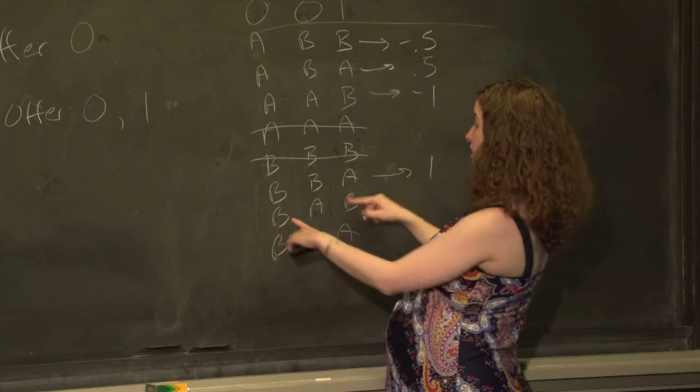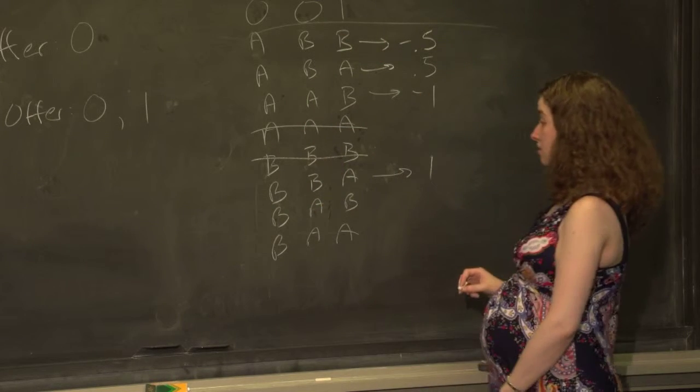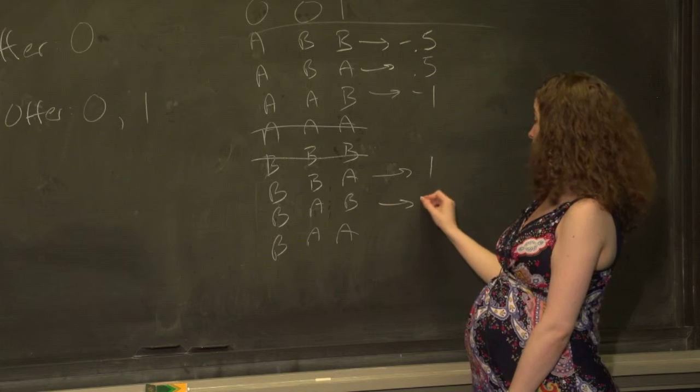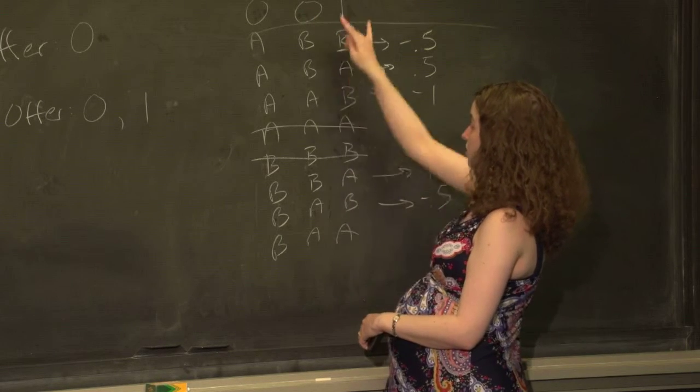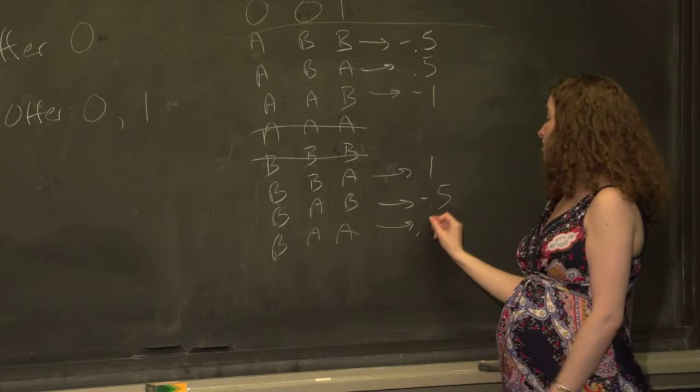Here we've got 1 minus the mean of 0 and 0 is 1. We've got 0 minus the mean of 0 and 1 is negative 0.5. And we've got the mean of 0 and 1, which is 0.5 minus 0, which is positive 0.5.